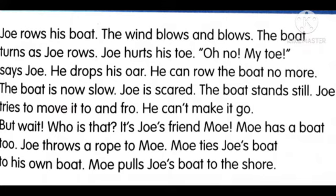The boat turns as Joe rows. The boat turns as Joe rows. So as Joe is rowing the boat, because of the wind the boat is turning — it turns and turns. Joe hurts his toe. Joe, O-E, hurts his toe. The fingers on feet we call them toes. Can you see the red color on his toes? That shows he was hurt.